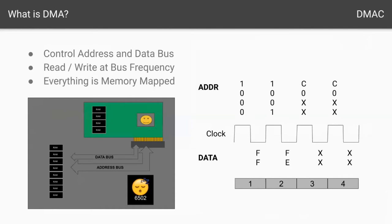So what is DMA? In the Apple, DMA is the ability for a peripheral to take control of the address and data bus without the assistance of the CPU to read and write to memory and peripherals. In Woz's design in the Apple, there can only be one device accessing the address and data bus at a time. So when the peripheral has control, the clock is actually stopped to the CPU. The diagram on the right shows that when performing DMA, the peripheral is able to read and write on every clock cycle — so there are four clock cycles here and the peripheral was able to read or write four times.